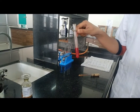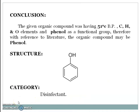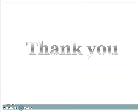Result: on the basis of tests performed above, with reference to the handbook, the given organic compound is aromatic, unsaturated, acidic, and phenolic. The boiling point is 51°C. The compound contains carbon, hydrogen, and oxygen, with phenol as the functional group. Conclusion: the given organic compound has a boiling point of 51°C, contains carbon, hydrogen, and oxygen, and phenol as a functional group. Therefore, with reference to literature, the organic compound is phenol. This is the structure of phenol and it is a disinfectant. Thank you, dear student, for attending the practical session.